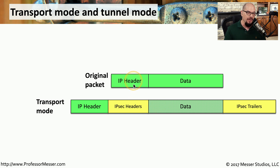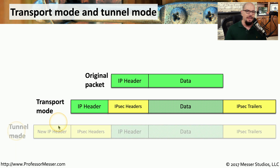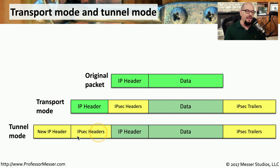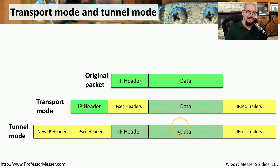The original IP header is the one used in transport mode, and that may not be enough security for many people. To add additional security, we may want to use tunnel mode. With tunnel mode, we're taking the original IP header and the original data, encrypting that data, and putting it inside of an IPsec header and IPsec trailer. We're then adding a separate brand new IP header to the beginning, so that anyone looking at this data would have no idea where the original data was really originating from or where it's going.